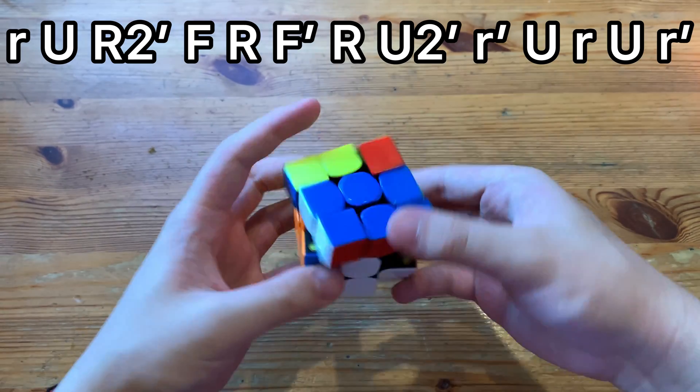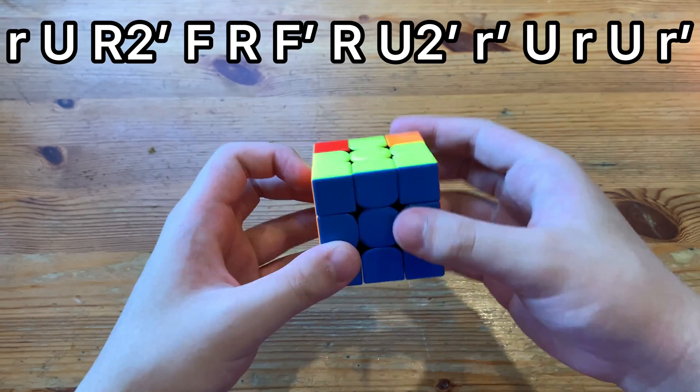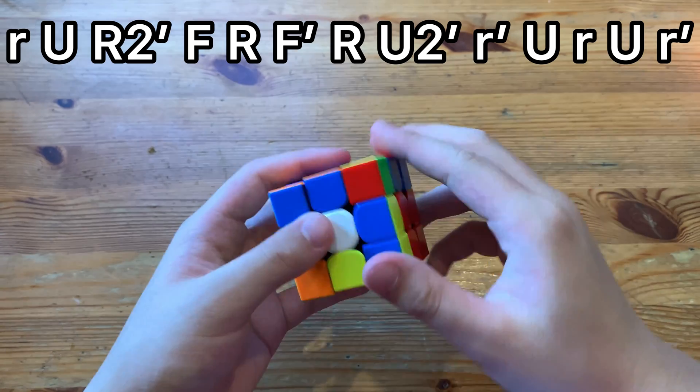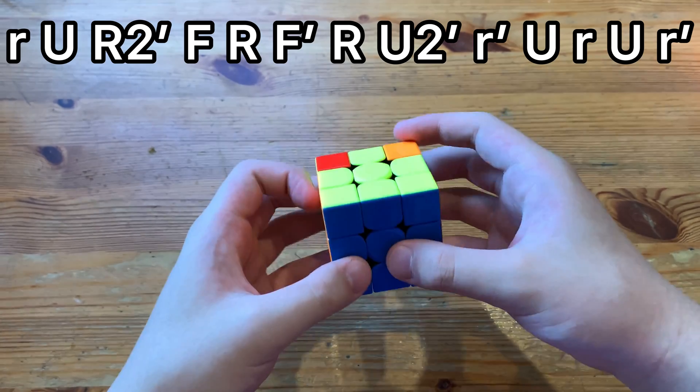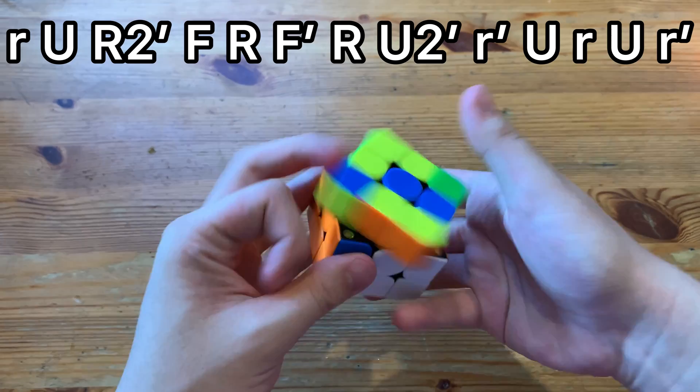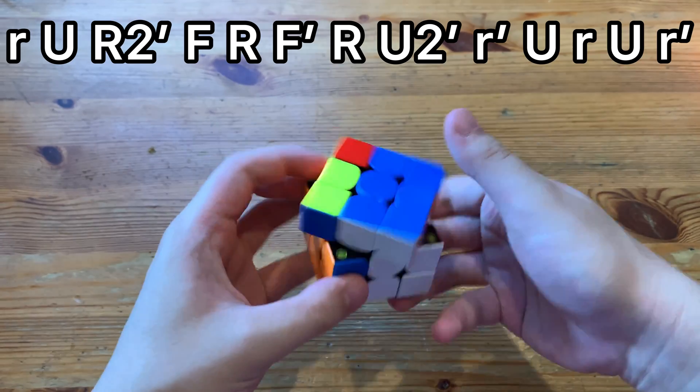But anyways, it's a ZBLL that's quite fast and quite nice, now that I found myself. And the recognition is pretty easy as well. You should recognize that it's a T with J perm and twisted corners.